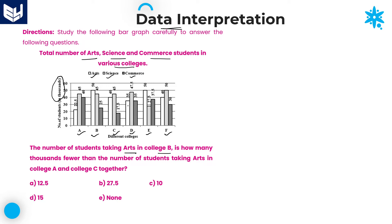This is very important because all the values are somewhat close to each other. When you are trying to see the numbers, they all look somewhat close to each other. Because of that reason, you need to be very cautious. Observation is very important. The question is: the number of students taking arts in college B — this is college B.